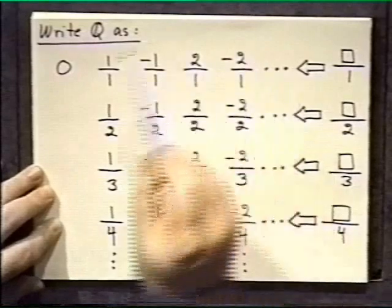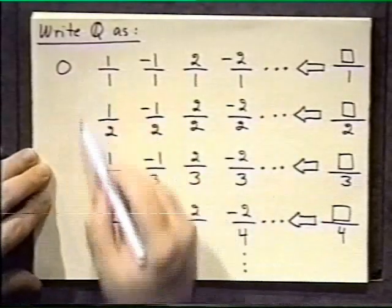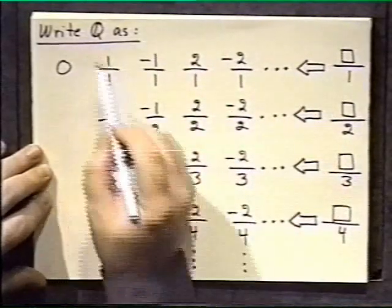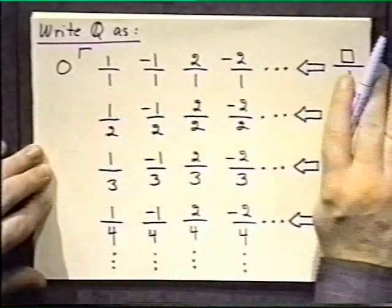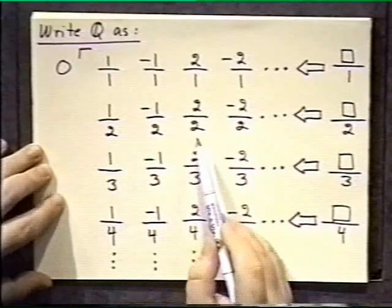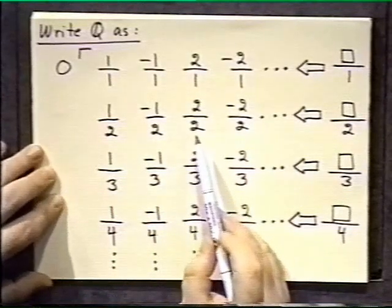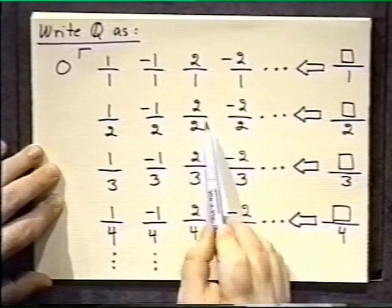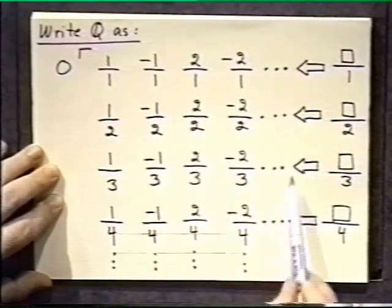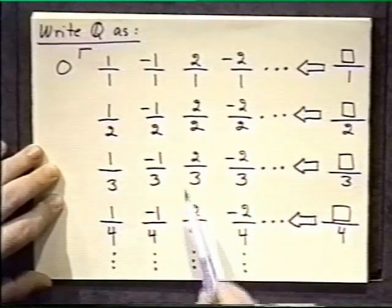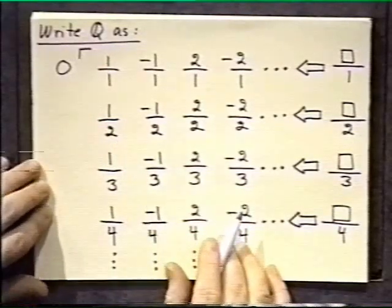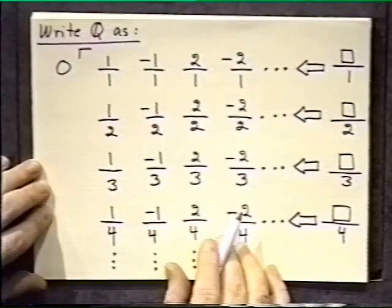So by this organization, what I have is a kind of triangular or rectangular array. If I start at this corner and go off to infinity to the right or down, I get every rational number. You may notice there will be repeats — that's okay. I am getting all the rational numbers, possibly with repeats, like 2 over 2 is the same as 1 over 1, and 2 over 4 is the same as 1 over 2.